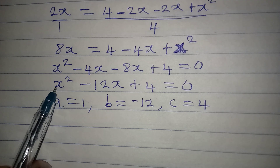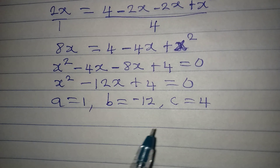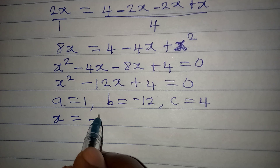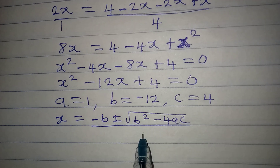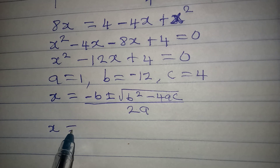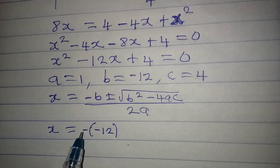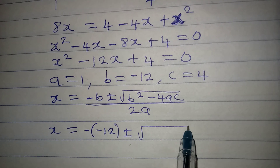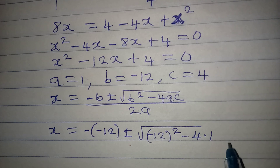The coefficient of x² is 1, so a equals 1; the coefficient of x is minus 12, so b equals minus 12; and the constant is 4, so c equals 4. The quadratic formula is x equals minus b plus or minus square root of b² minus 4ac, all over 2a. Substituting: x equals minus (minus 12) plus or minus square root of (minus 12)² minus 4 times 1 times 4.